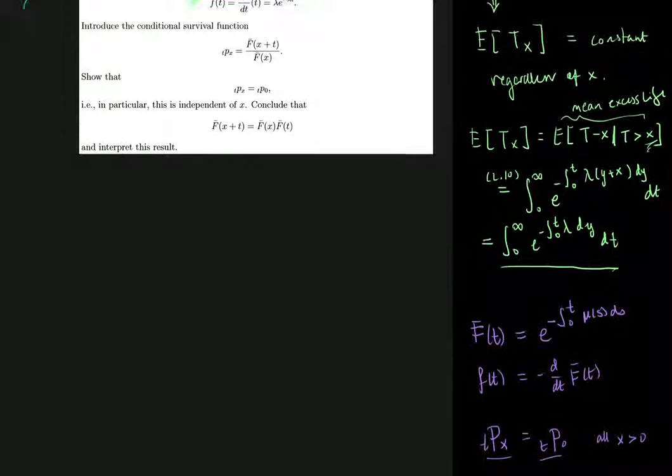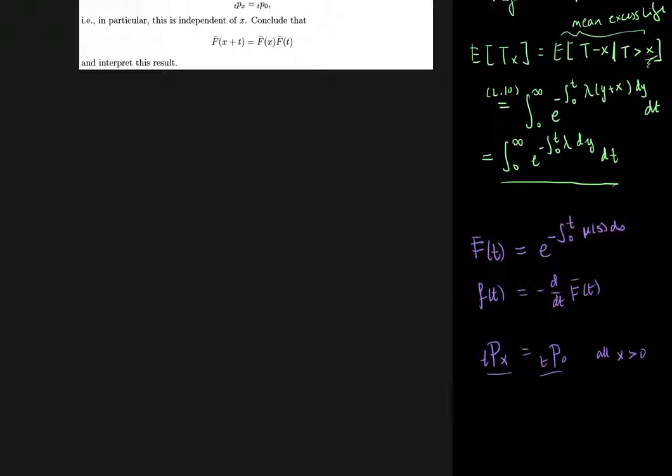And conclude and interpret the result that F̄(x+t), the survival function at x+t, or the probability that a newborn will survive x+t years, is given by the product of survival probabilities for a newborn: first the probability of survival for the next x years, then the probability of survival for the next t years.